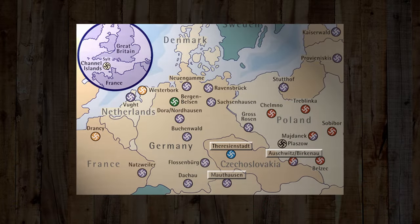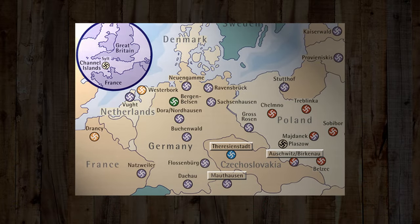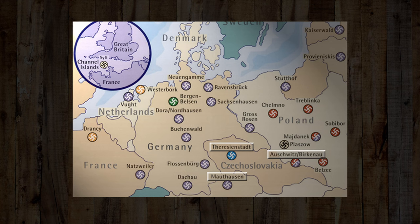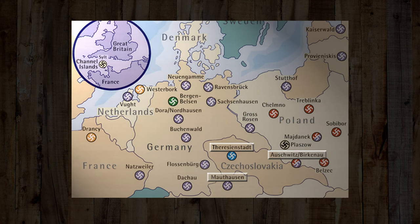I start my story with this map. This is a map that shows all the main concentration camps and certainly all the death camps that existed in Nazi-occupied Europe during the Second World War. It doesn't show all of them because there were hundreds and hundreds of camps. Everywhere where you see the swastika, the Nazi emblem, there you see a name indicating either a transit camp, a slave labor camp, a concentration camp, or a death camp.